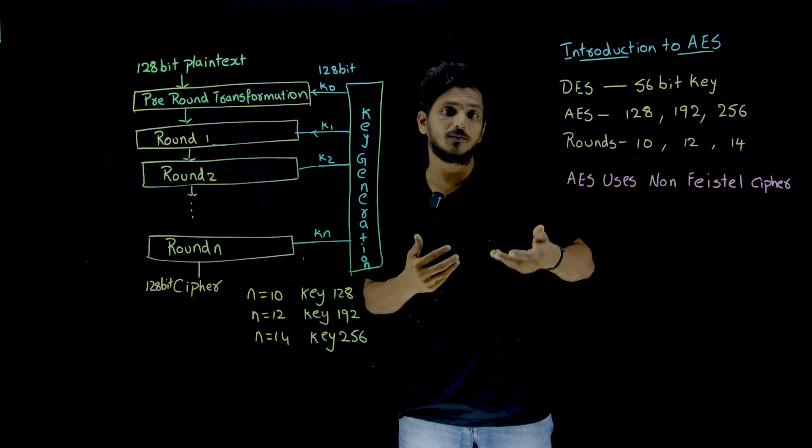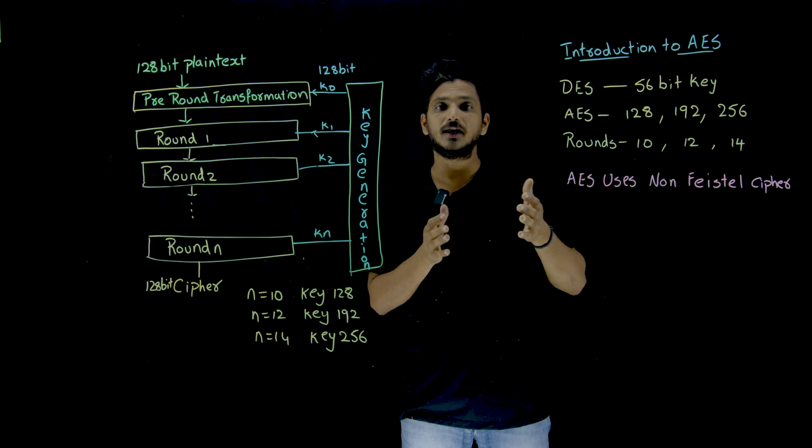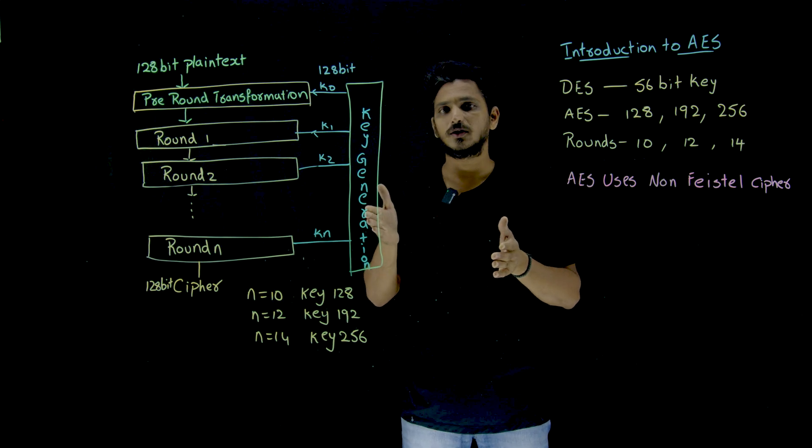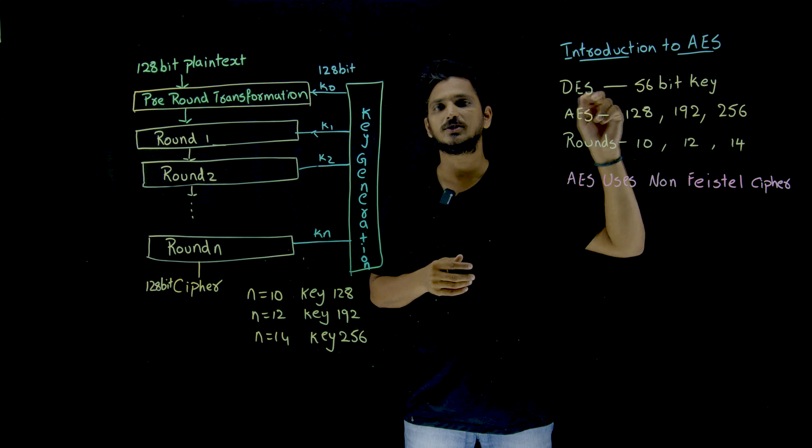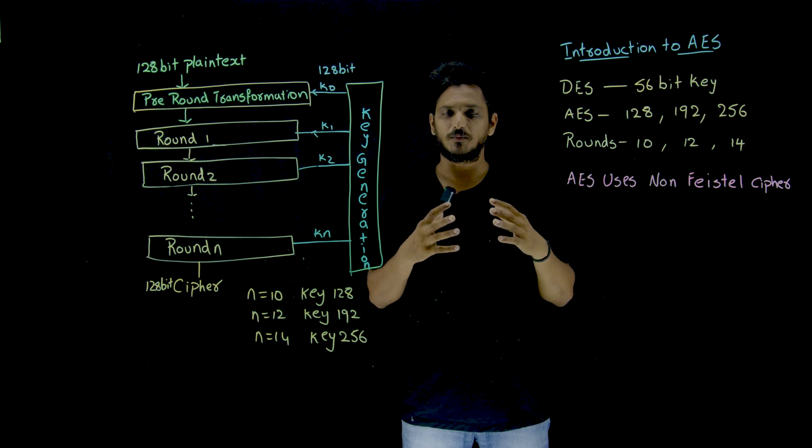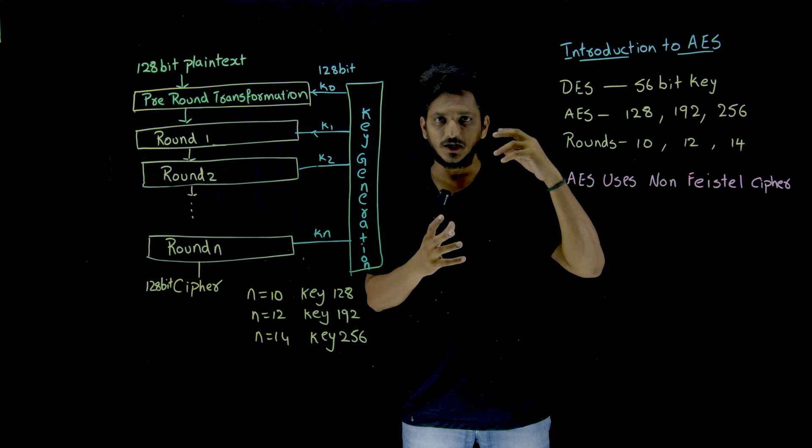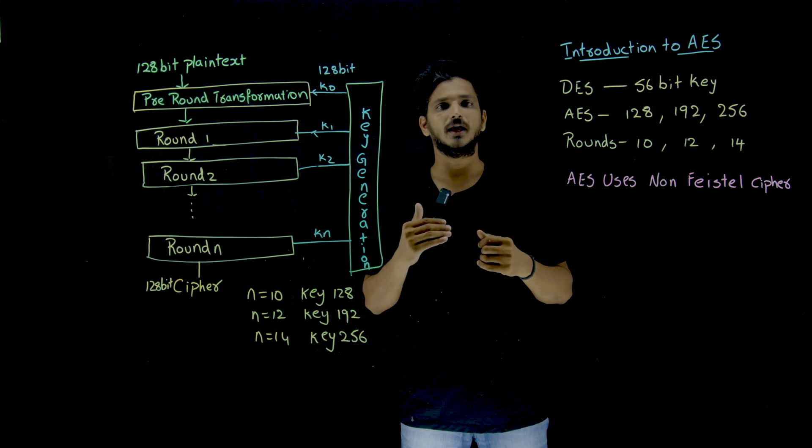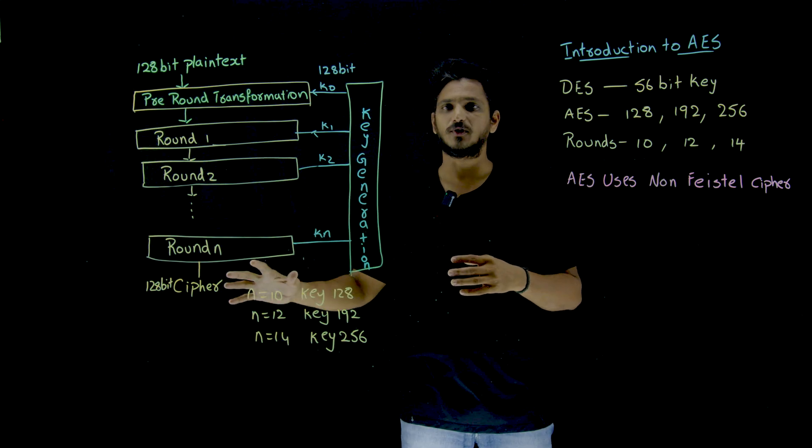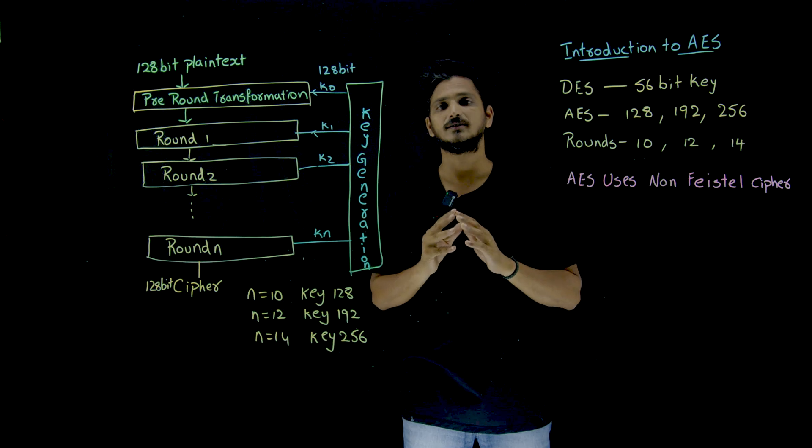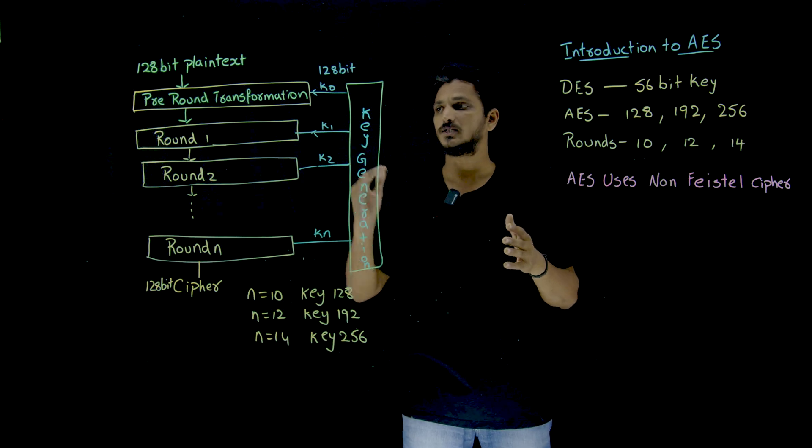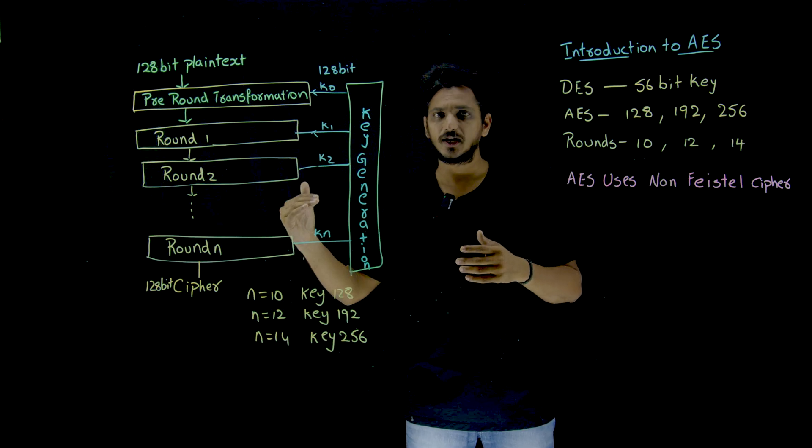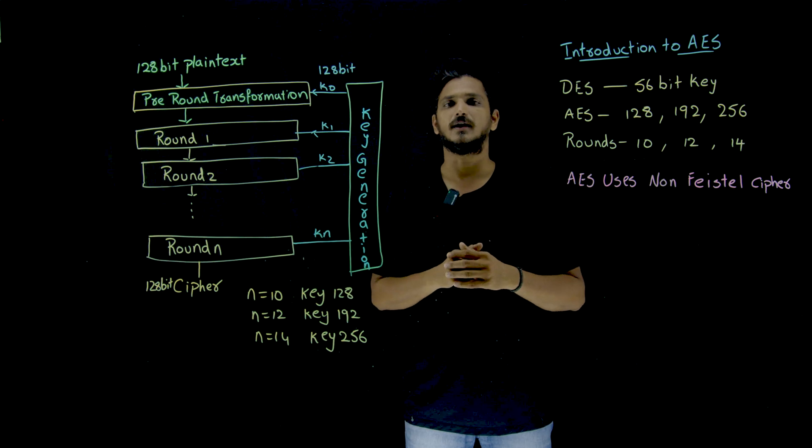So in order to overcome that disadvantage, they invented a new algorithm, which is Advanced Encryption Standard. Here, the goal is completely to increase the size of key. So for that purpose, AES goes like this. First, we try to understand the overview in this class. In our coming classes, we are going to understand step-by-step what happens inside clearly.